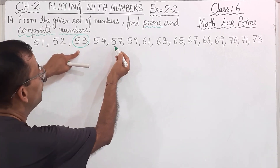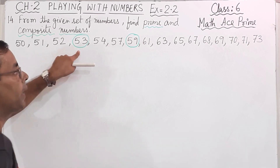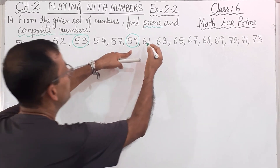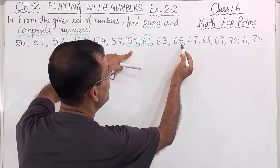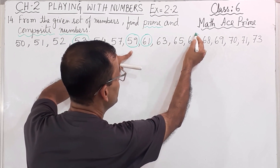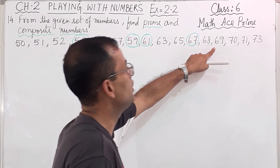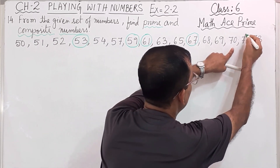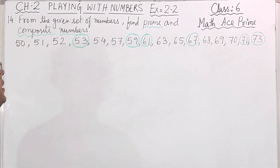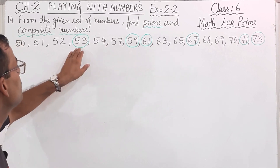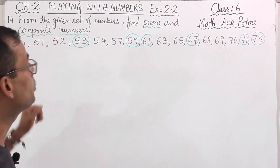Then 54 — no. 57 — no. 59 — yes, 59 is a prime number. Then 61 is a prime number. 63 — no. 65 — no. 67 — yes, 67 is a prime number. 68 — no. 69 — no. 70 — no. 71 — yes, 71 is a prime number. 73 is a prime number. So the prime numbers are: 53, 59, 61, 67, 71, and 73.